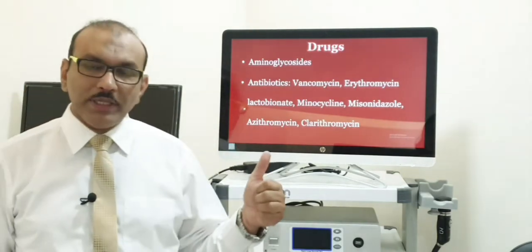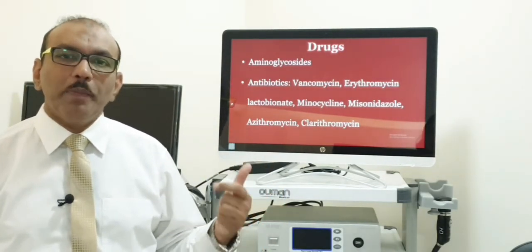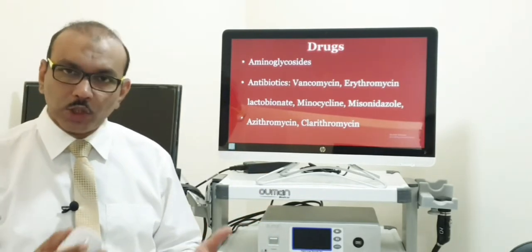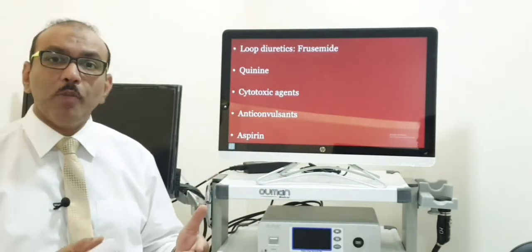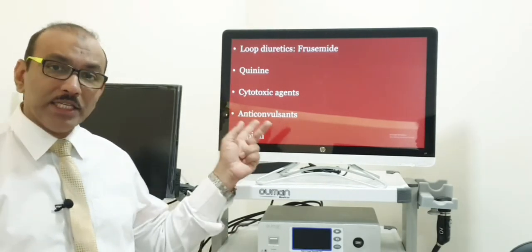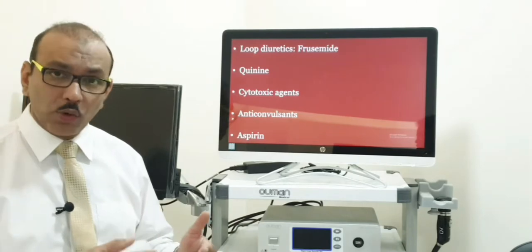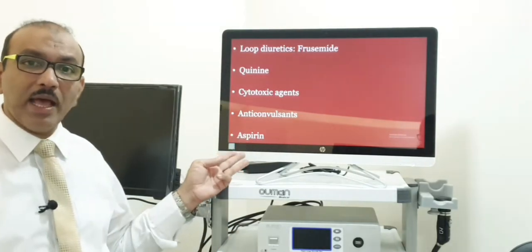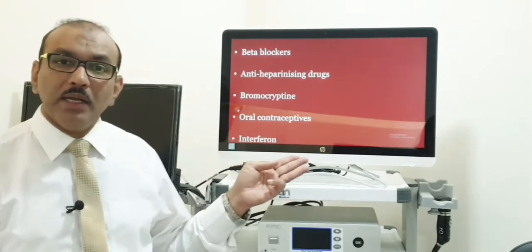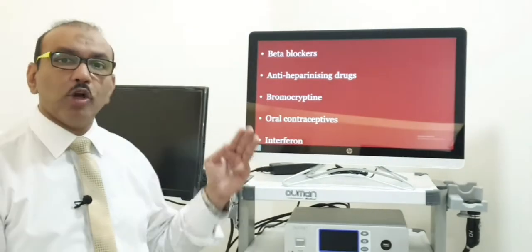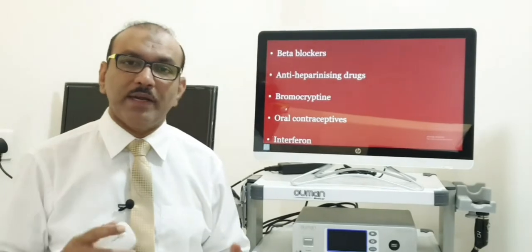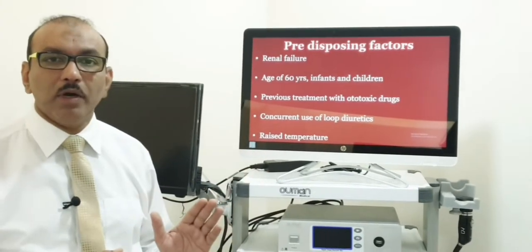To start with aminoglycosides, followed by antibiotics like erythromycin, clarithromycin, azithromycin, and other drugs like furosemide, which is commonly used in renal failure patients. Anti-malarial drugs, likewise anti-neoplastic drugs, then anti-convulsants, the commonly used drug aspirin, cardiac drugs like beta blockers, oral contraceptives, interferons — and there is a long list. The commonly used drugs I have mentioned here.